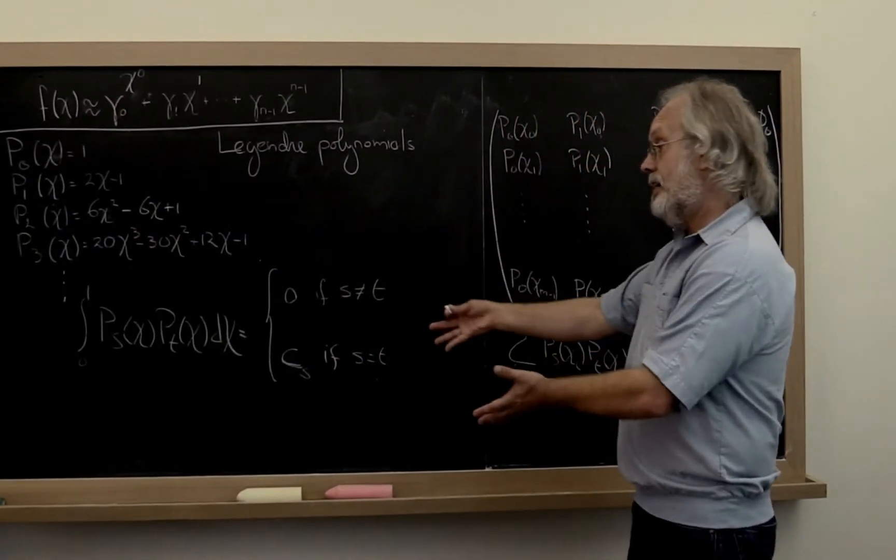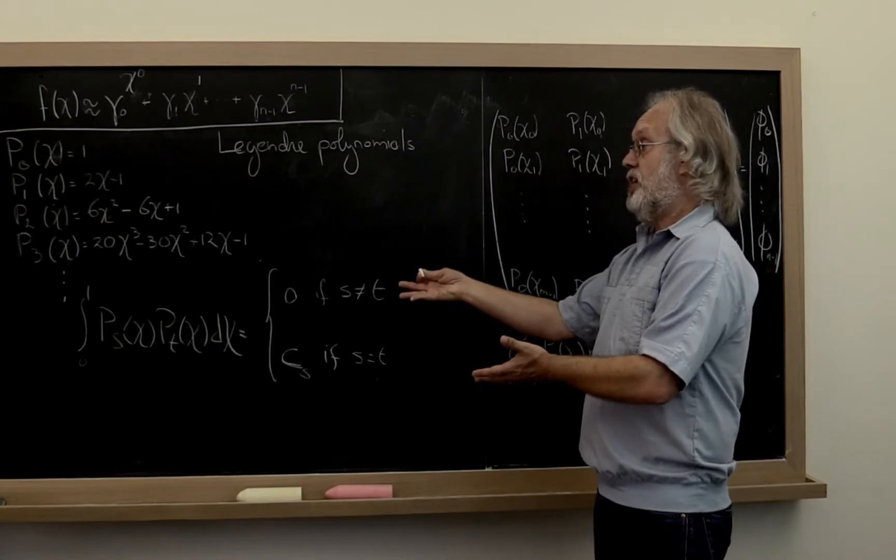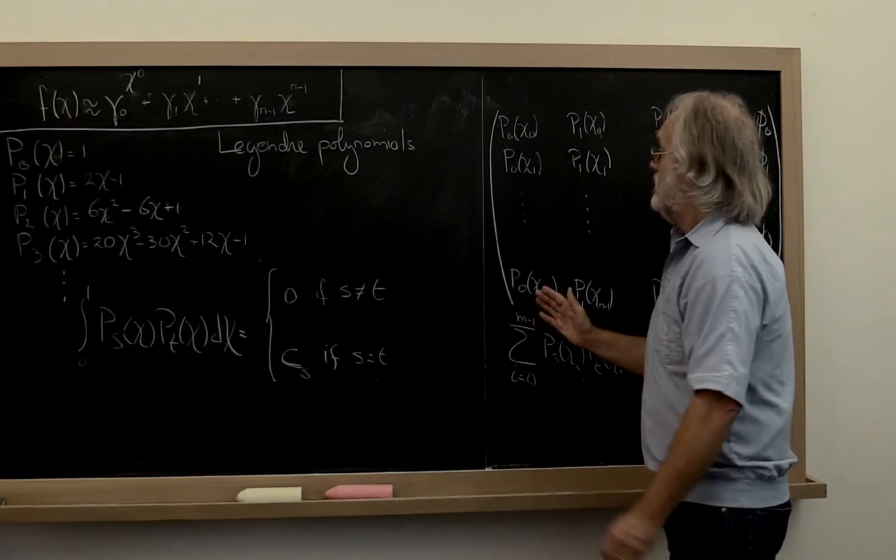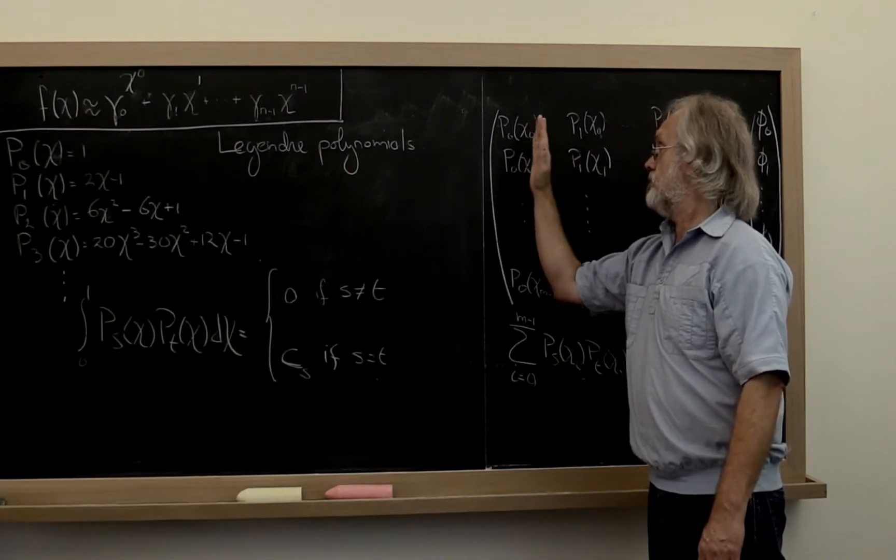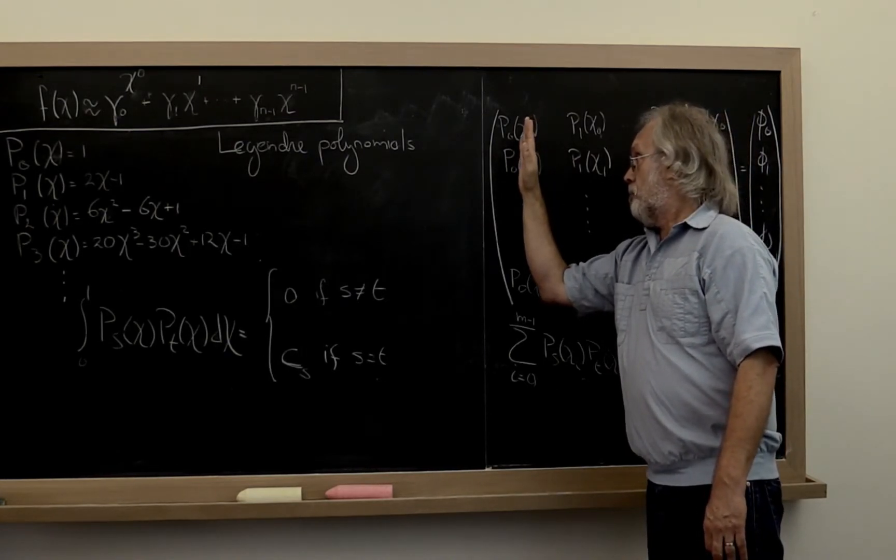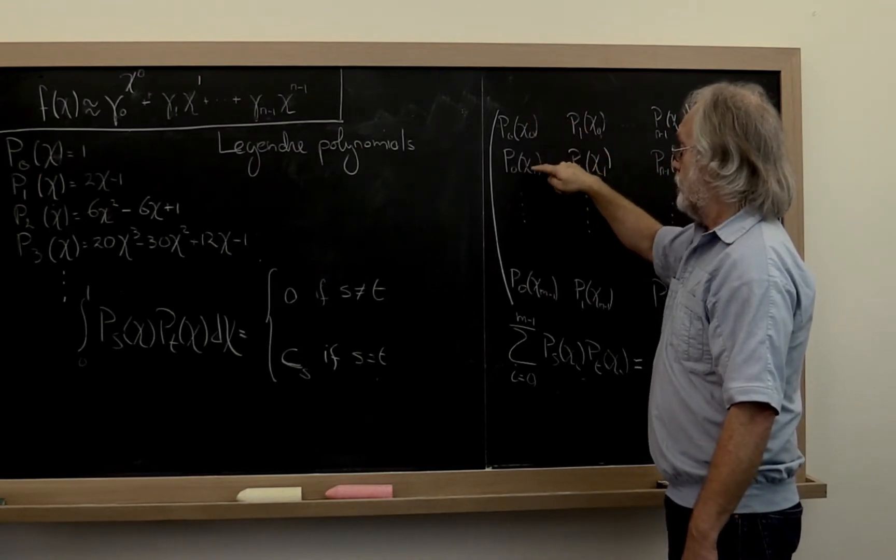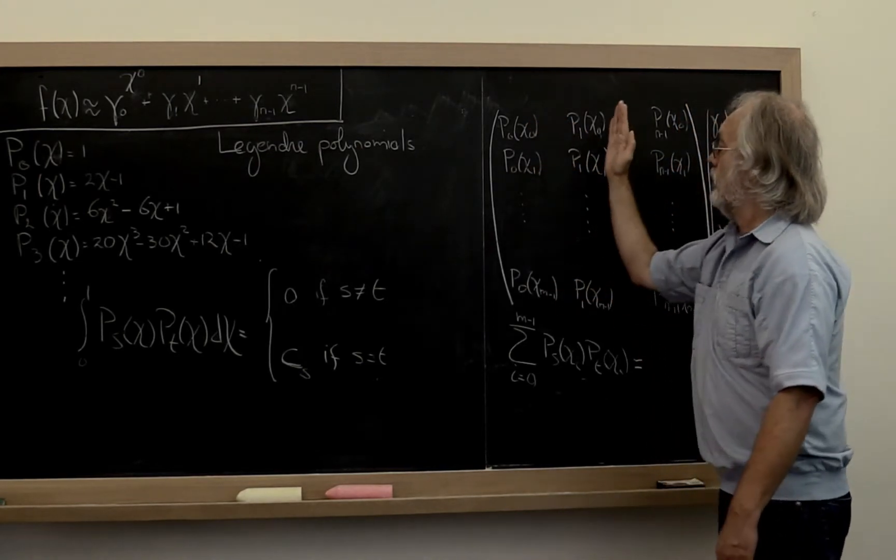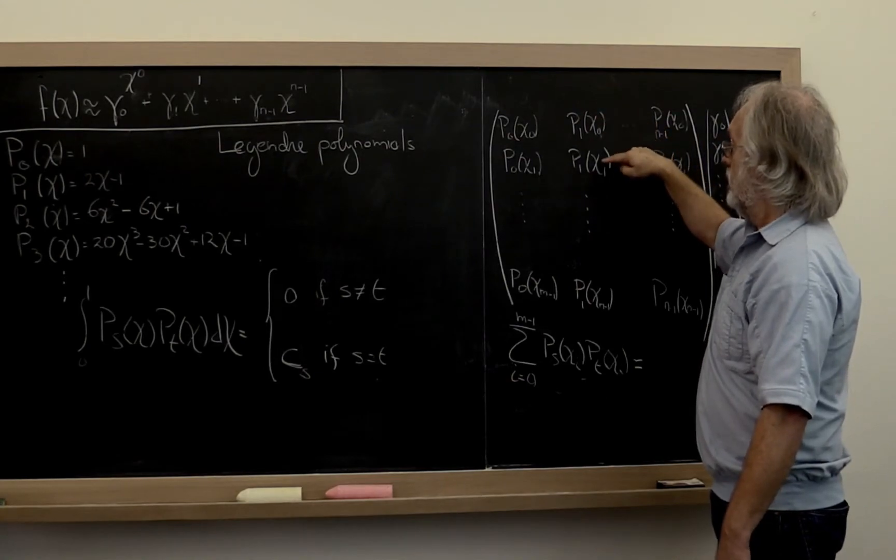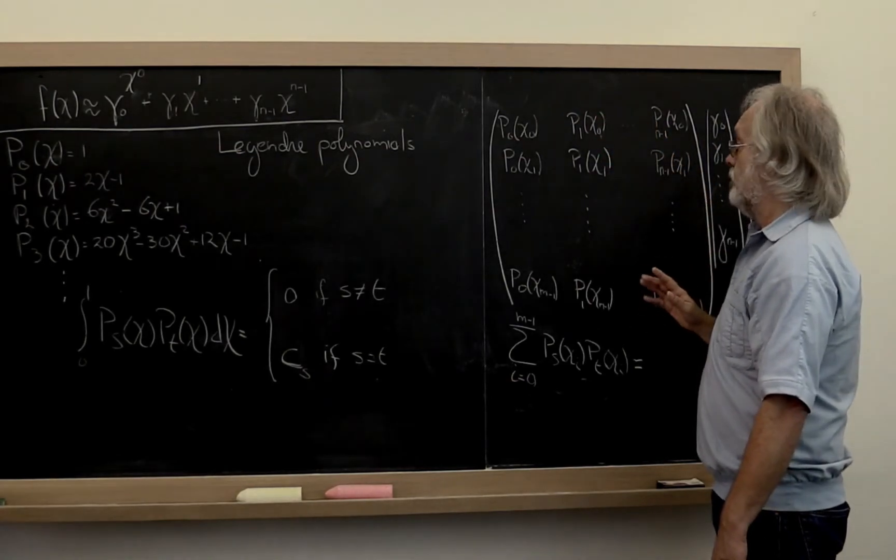So what you can then do is do the exact same thing that we did before, which is create a matrix with as its columns the polynomial of degree 0 evaluated at chi 0, chi 1, and so forth. And then the polynomial with degree 1 evaluated at chi 0, chi 1, and so forth.